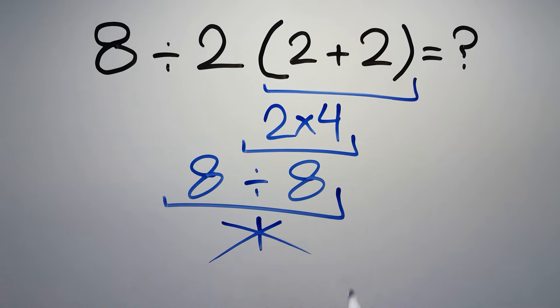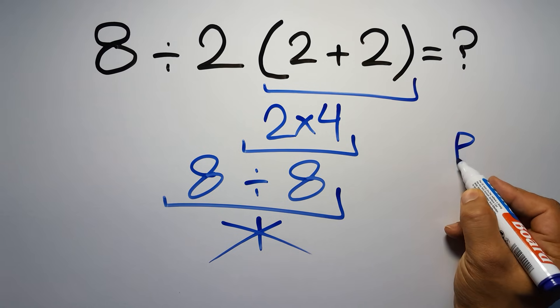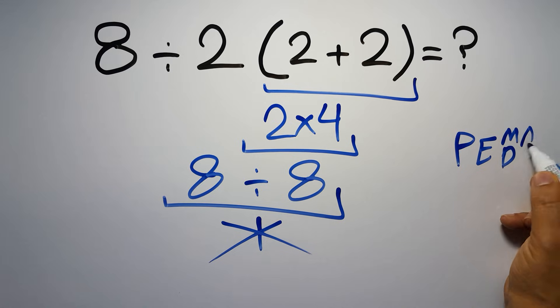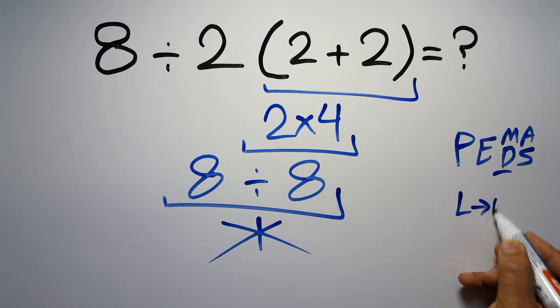But this answer is not correct, because according to the order of operations, first we have to do parentheses, then exponents, then multiplication or division, and finally addition or subtraction. Remember that multiplication and division have equal priority, and we have to work from left to right, and the same applies to addition and subtraction.